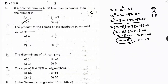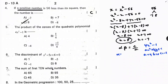Next: find the product of zeros of a quadratic polynomial. Using alpha × beta = c/a, compare with ax² + bx + c: a = 4, b = 0 (no linear term), c = −1. So the product of zeros = −1/4. Correct option is D.